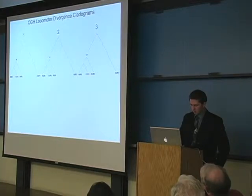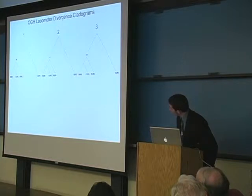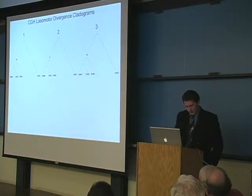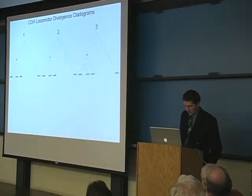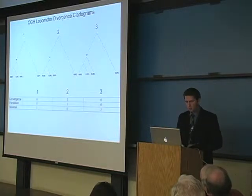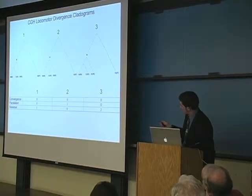In the first tree, the CGH LCA was a knuckle walker, and bipedality evolved only in the human lineage. In the second, we assume the CGH LCA was a non-specialized palmegrate, and knuckle walking evolved in parallel in chimps and gorillas. In the third, we assume the CGH LCA was a biped, and knuckle walking evolved as a reversal in chimps and gorillas.